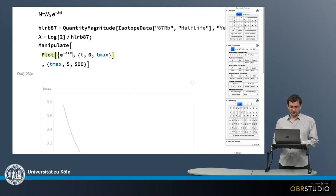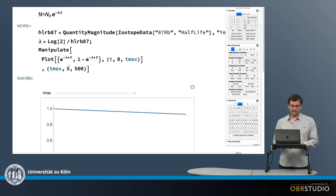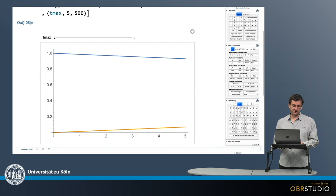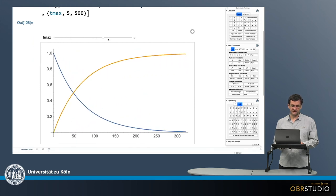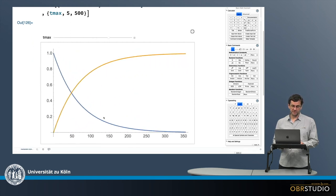So this is why I calculate here the difference to the remaining rubidium-87 by 1 minus this remaining amount and then plot the strontium-87 here as well. And then I can see the decay of rubidium-87 and the increase of strontium-87. And of course the crossover here at half the amount is exactly at 48.1 billion years.